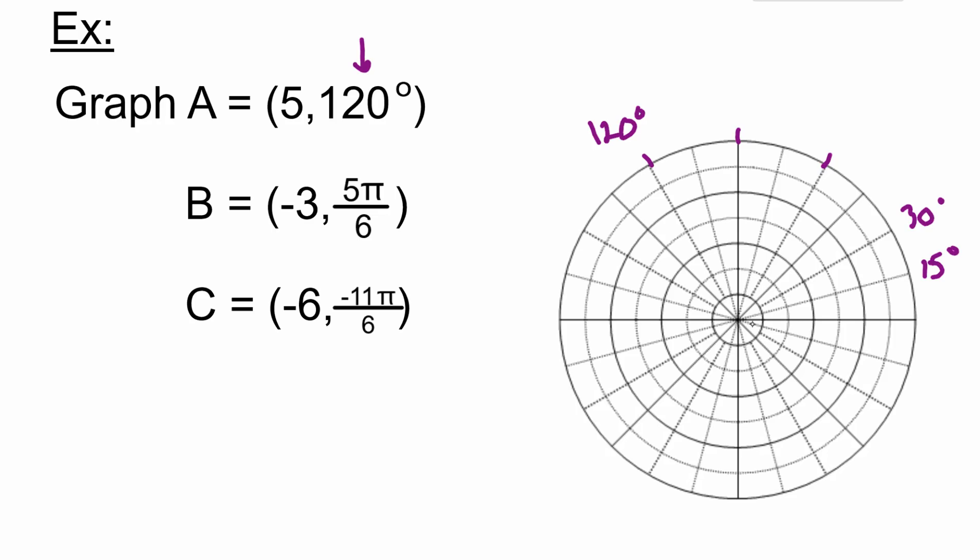Then we go out 5: 1, 2, 3, 4, 5. That point right there is (5, 120°), which is point A.